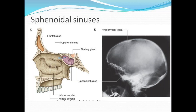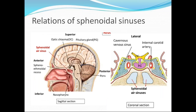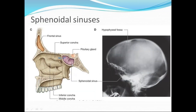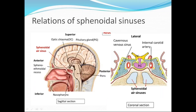The sphenoidal sinus extends posteriorly up to the anterior margin of the foramen magnum, involving the clivus and basi-sphenoid region. Anteriorly it may encroach on the roof of the orbit, and laterally it extends up to the pterygoid canal. Looking at the relations, this diagram shows the cavernous sinus, pituitary gland, optic chiasma, optic nerve, and internal carotid artery with the abducens nerve in the cavernous sinus.